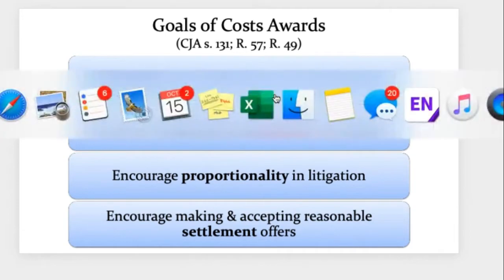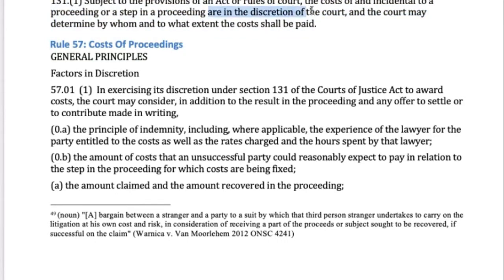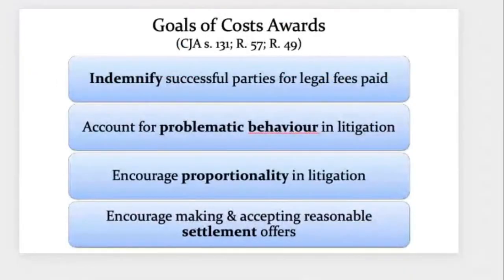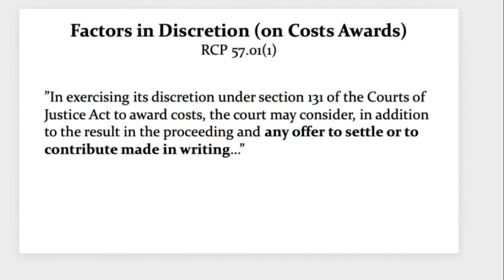You looked at some readings about costs. The key one to start with is s.131 of the Court of Justice Act: 'Subject to the provisions of an Act of rules of court, the costs of and incidental to a proceeding or a step in a proceeding are in the discretion of the court.' That means this is an area where we defer a lot to trial judges — appellate courts in particular are going to defer to trial judges to try to balance all these things and make the order. In a cost hearing, it's unusual to see much reliance on case law because it's considered to be discretionary.